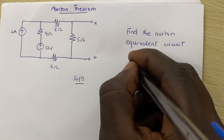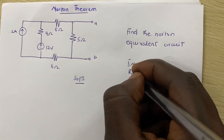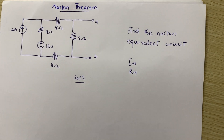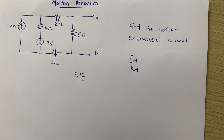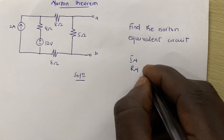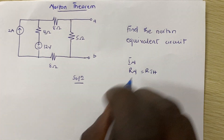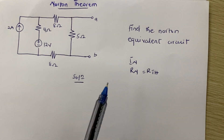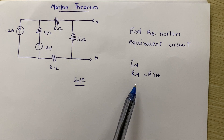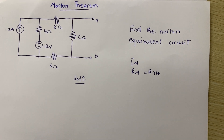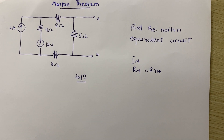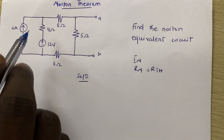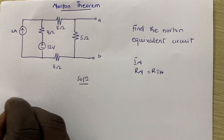Just like Thevenin, Rn is the same as Rth. To find Rn, we make sure that every current source is open-circuited and every voltage source is short-circuited. Now our circuit is going to look like this.